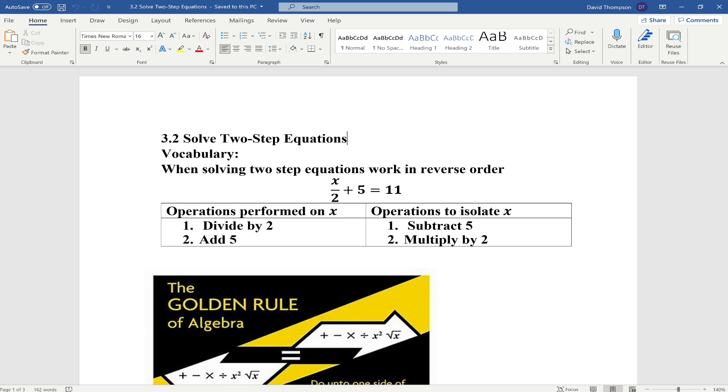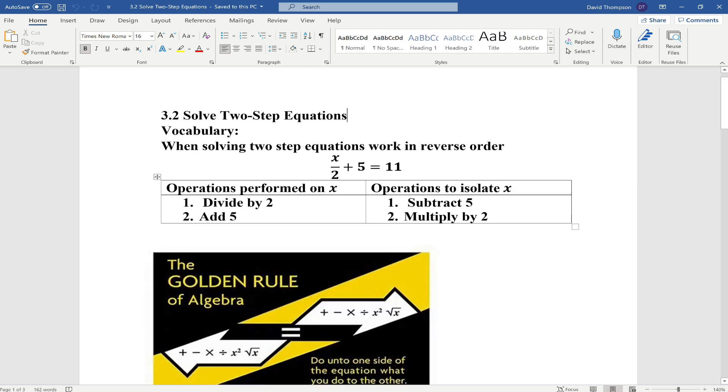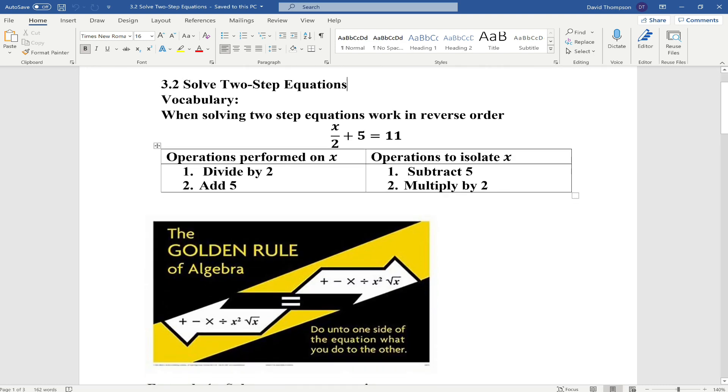What we did first is we divided x by 2, and then we added 5. In order to solve this, we want to subtract 5 from both sides first, and then multiply by 2. And then remember, recall the golden rule of algebra. Do unto one side of the equation what you do unto the other side.